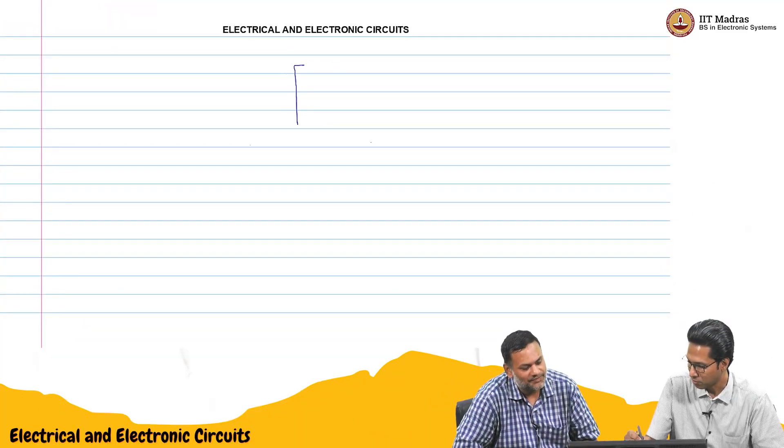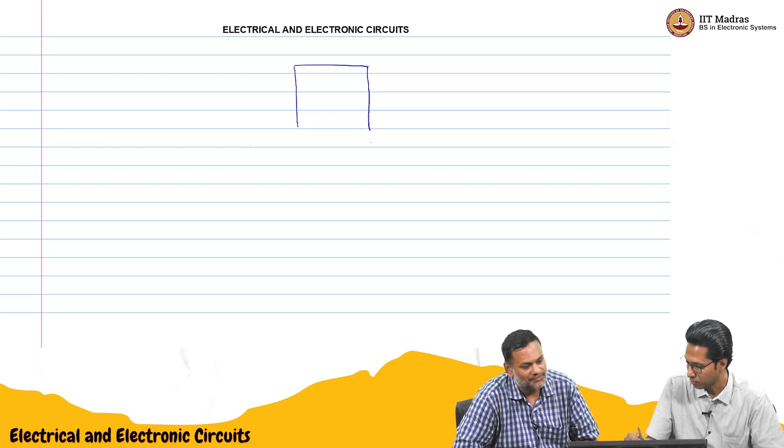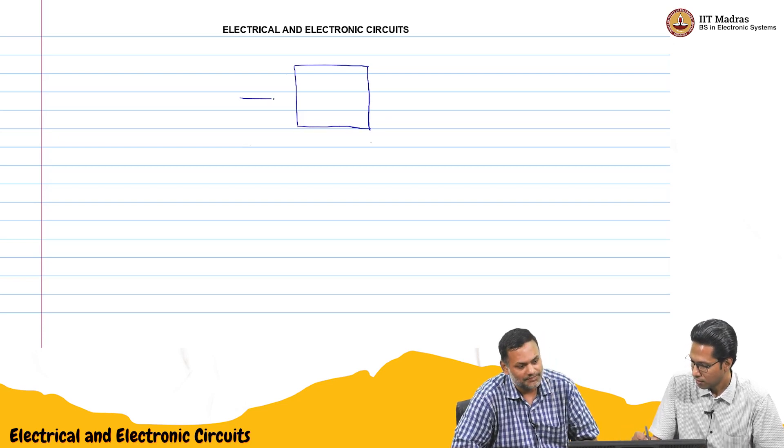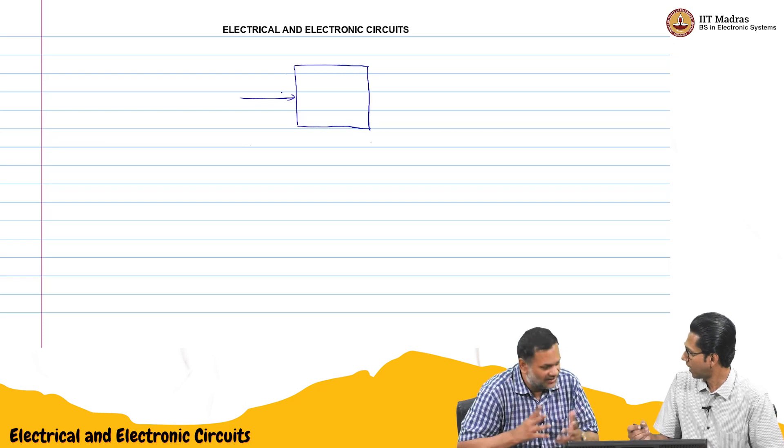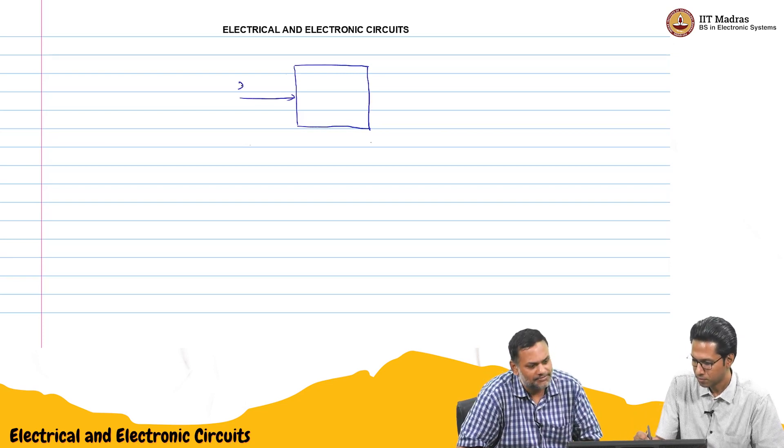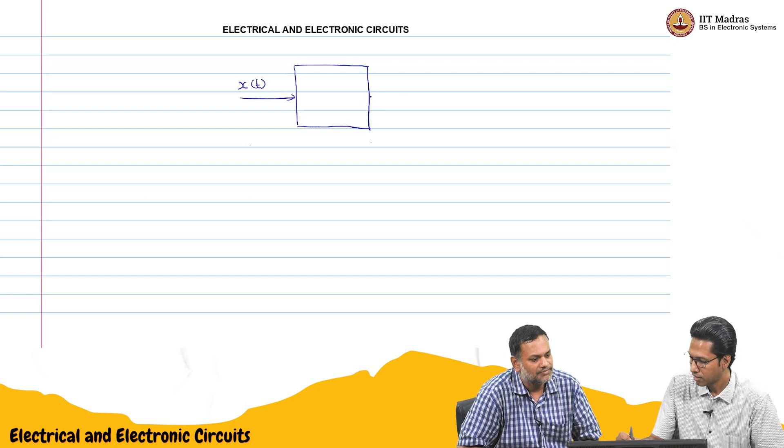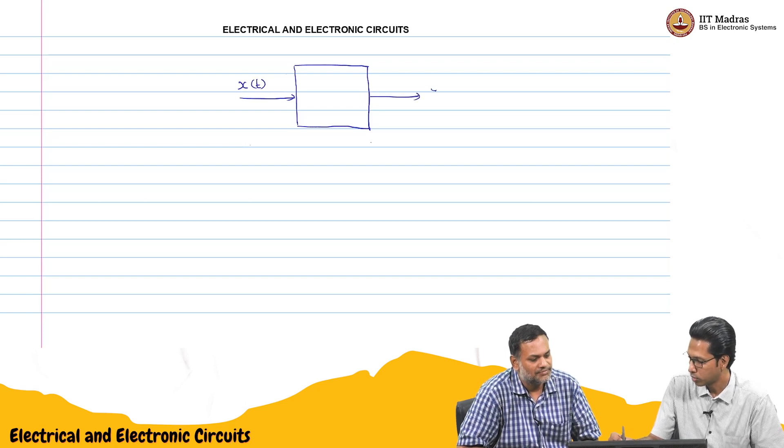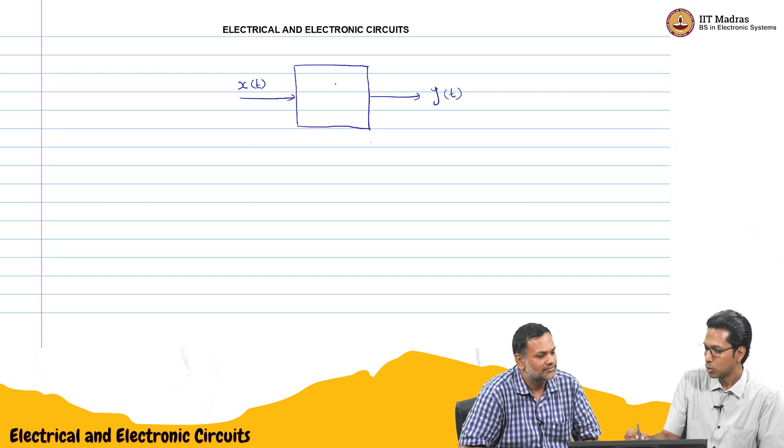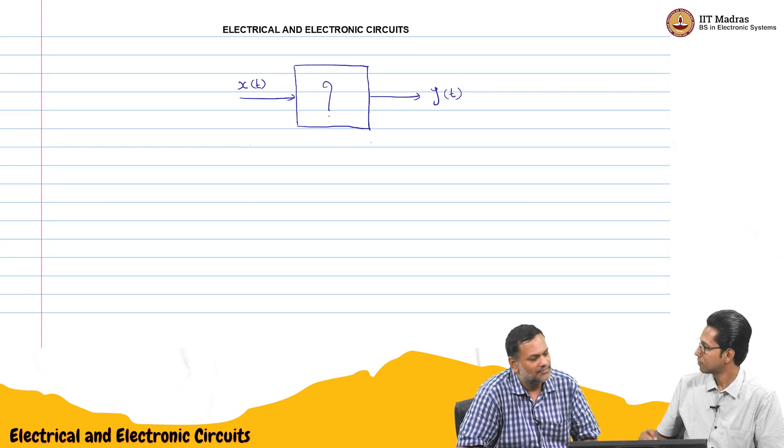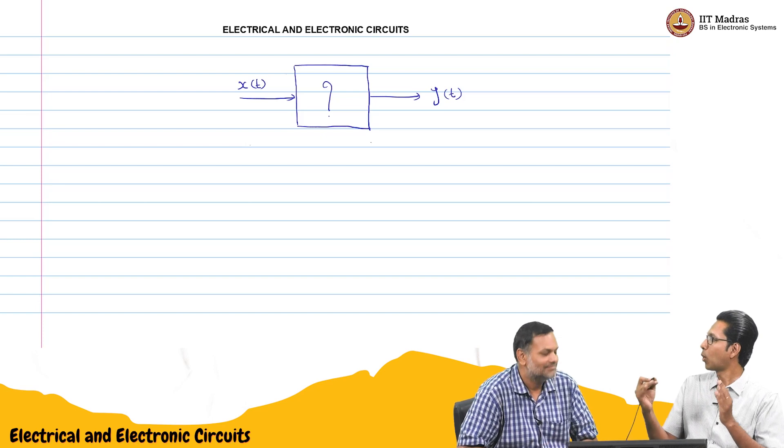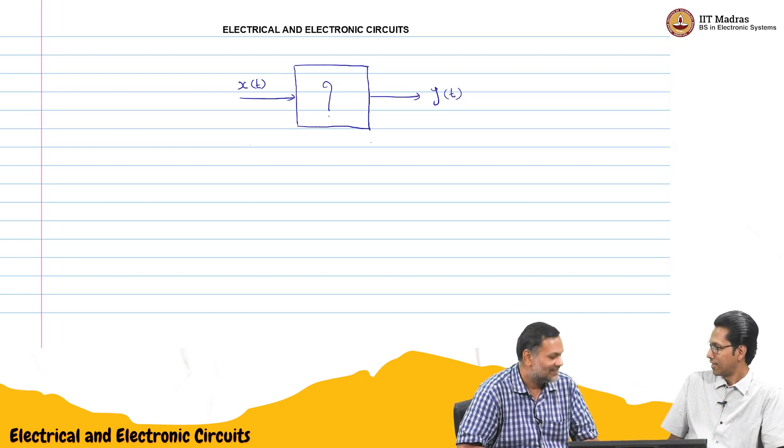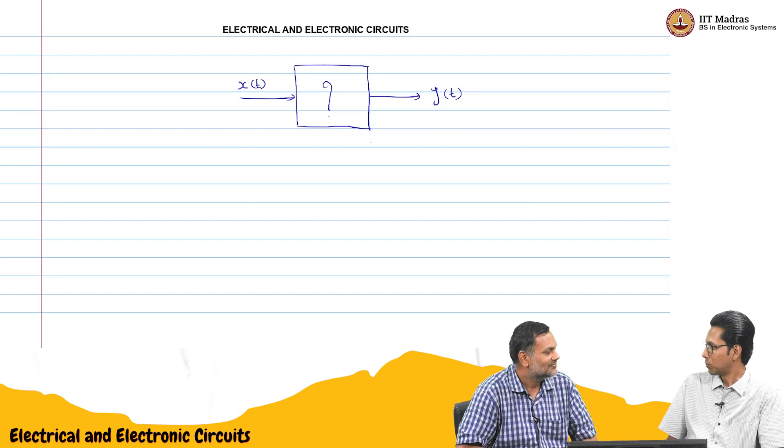So this means the circuit, if I can represent in some, let's say if I have a box that represents the circuit somehow. I'm giving some input X of t, and then I'm getting maybe output Y of t. So if this box can represent mathematically what that circuit is, probably that will help.